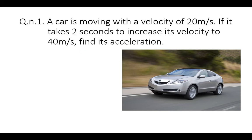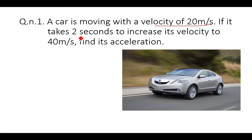To solve such numerical problems, first we have to mark the numbers which are given. Reading the question again: the car is moving with a velocity of 20 meters per second, so the initial velocity is 20 m/s. It takes 2 seconds to increase its velocity, so time taken is 2 seconds, and the final velocity is 40 meters per second. We need to find the acceleration.